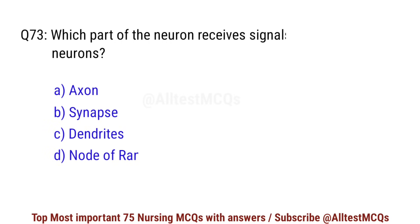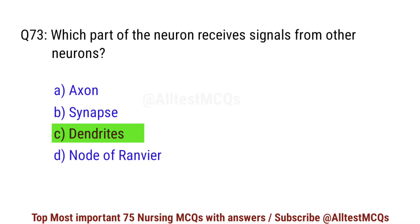Question number 73. Which part of the neuron receives signals from other neurons? Correct option is C: Dendrites.